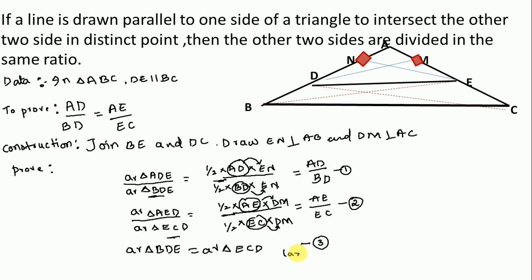From equation 1, 2, and 3, we can write again: AD divided by BD is equal to AE divided by EC. Here to prove is same and we proved here theorem.